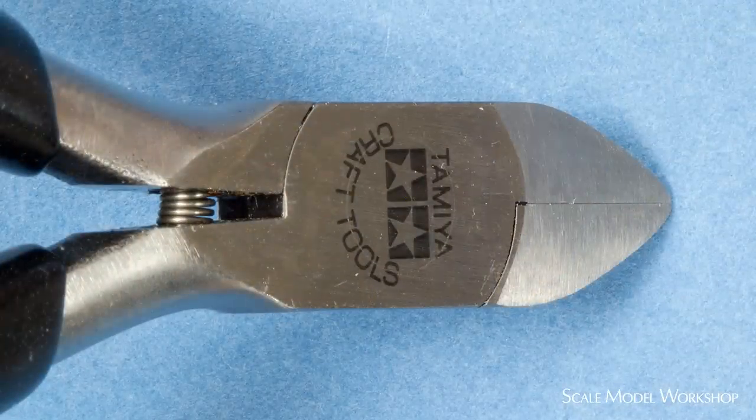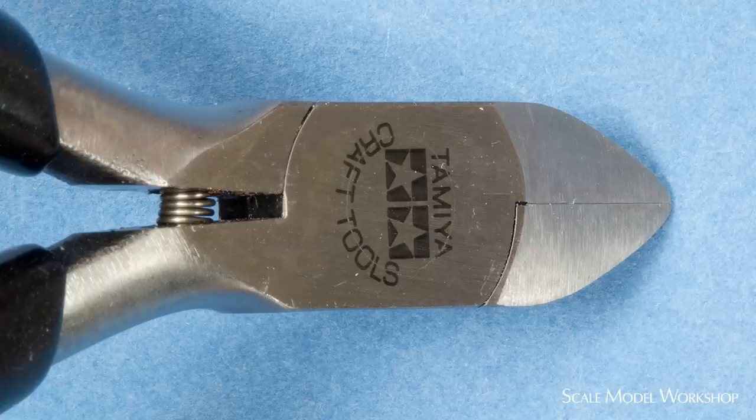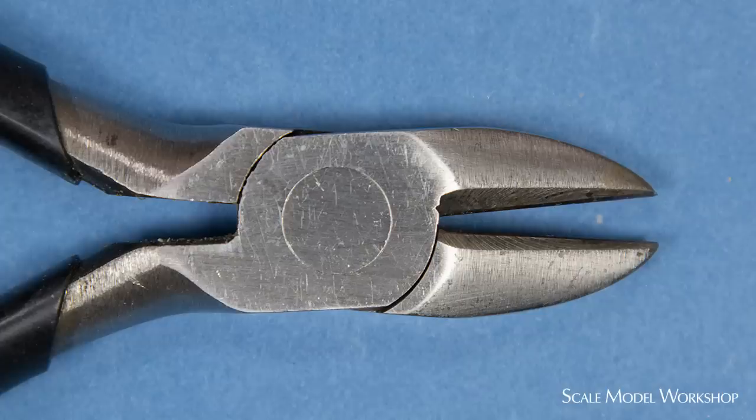Flush-cutting refers to the outside face being ground so that the jaws meet together to form a flush surface that leaves a relatively straight cut that's fairly flush with the surrounding area, as opposed to a traditional diagonal cutter that leaves a much more pronounced pinch cut.